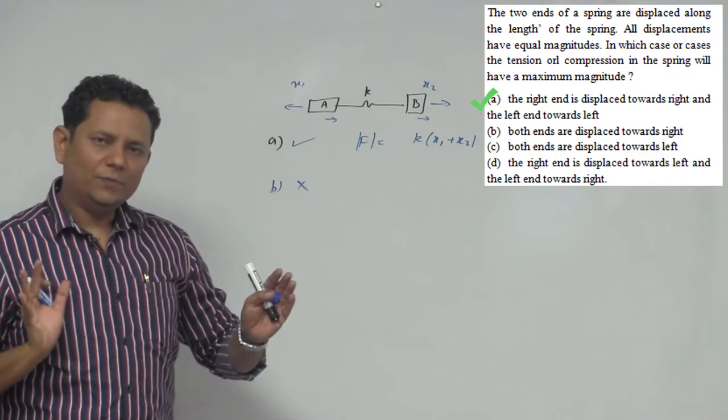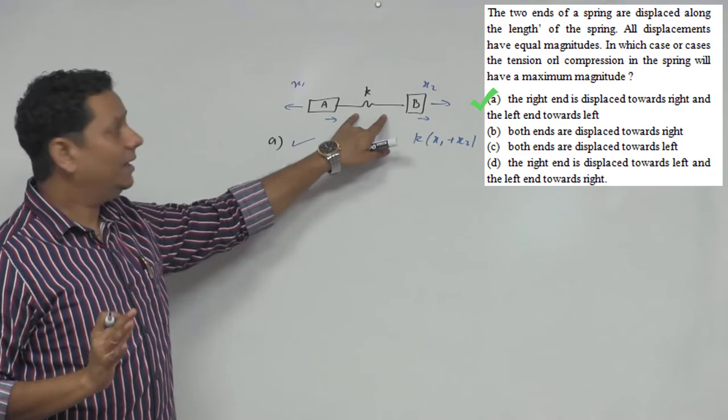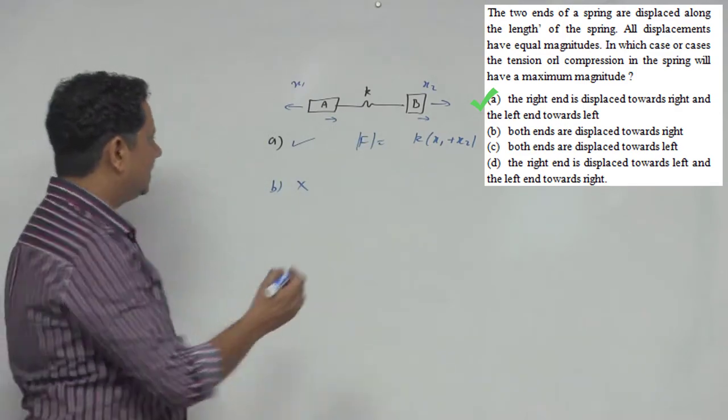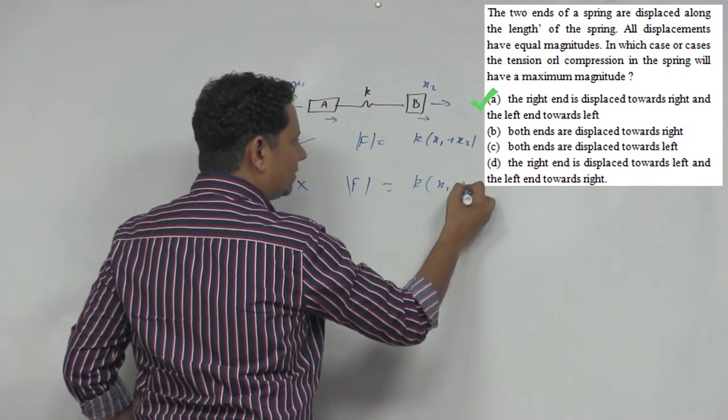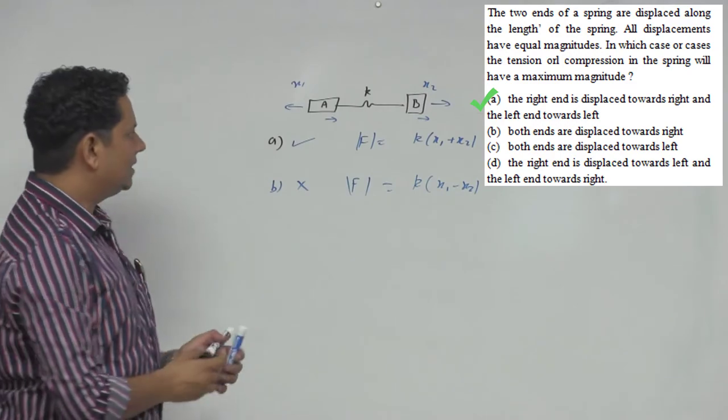When both move right, the force magnitude is K times the absolute value of (x1 minus x2), because the net change in spring length is the difference between the two displacements.